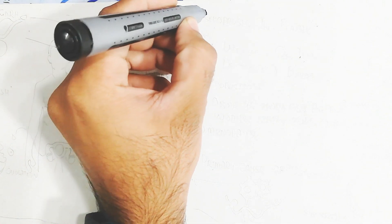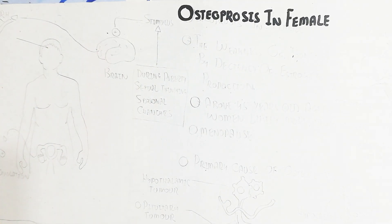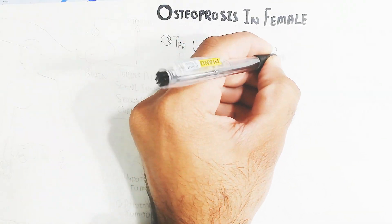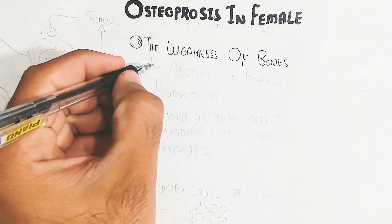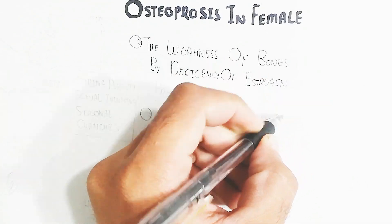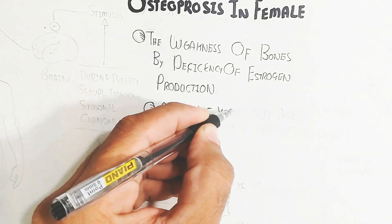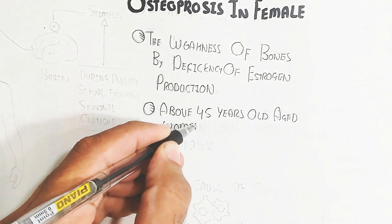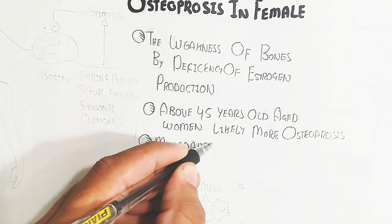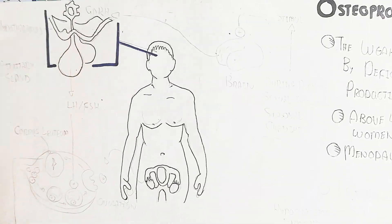In this video we will learn about osteoporosis in females. Osteoporosis is the weakness of bones due to deficiency of estrogen production, leading to bone weakness, bone deformities, and brittle bones. Women above 45 years old are more likely to develop osteoporosis compared to young females.